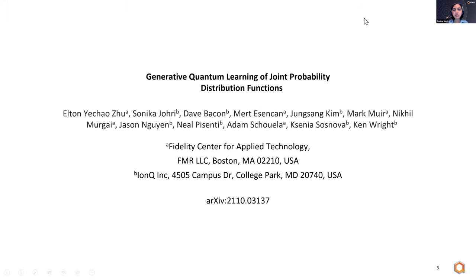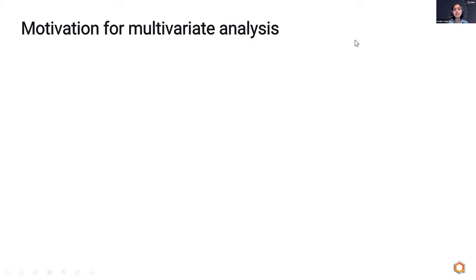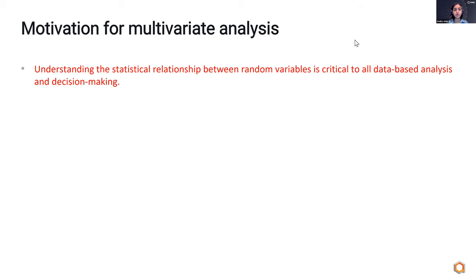The work is called Generative Learning of Joint Probability Distribution Functions. It's basically about how you can do multivariate analysis — the analysis of the joint distribution of many variables — on a quantum computer. Understanding the statistical relationship between random variables is obviously critical to any kind of data-based analysis and decision-making done across any industry or engineering discipline.